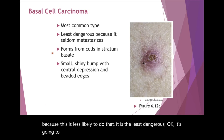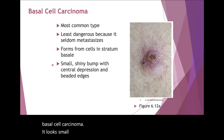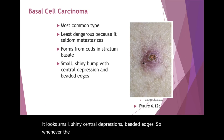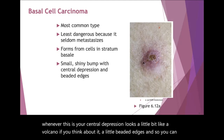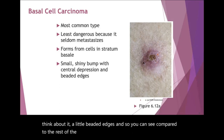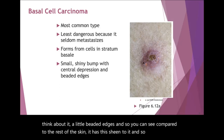Basal cell carcinoma forms in the stratum basale — that's why they call it basal cell carcinoma. It looks small and shiny with central depressions and beaded edges. When this is the central depression, it looks a little bit like a volcano with little beaded edges. You can see compared to the rest of the skin it has a sheen to it.